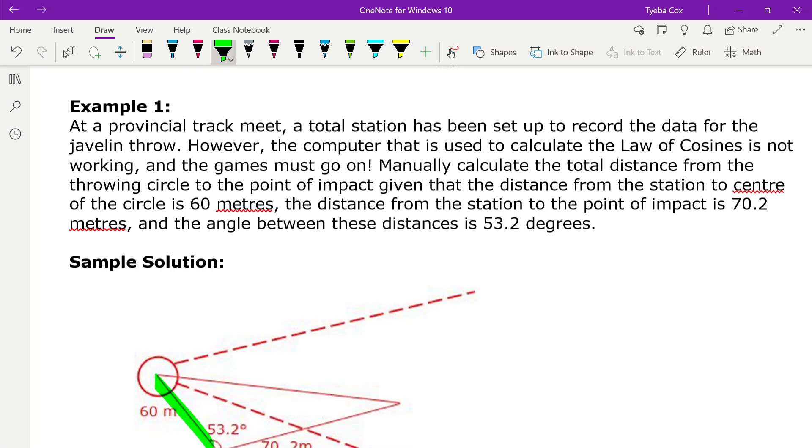So that's right here. Now the distance from the point of impact is 70.2 meters and the angle between these distances is 53.2 degrees.